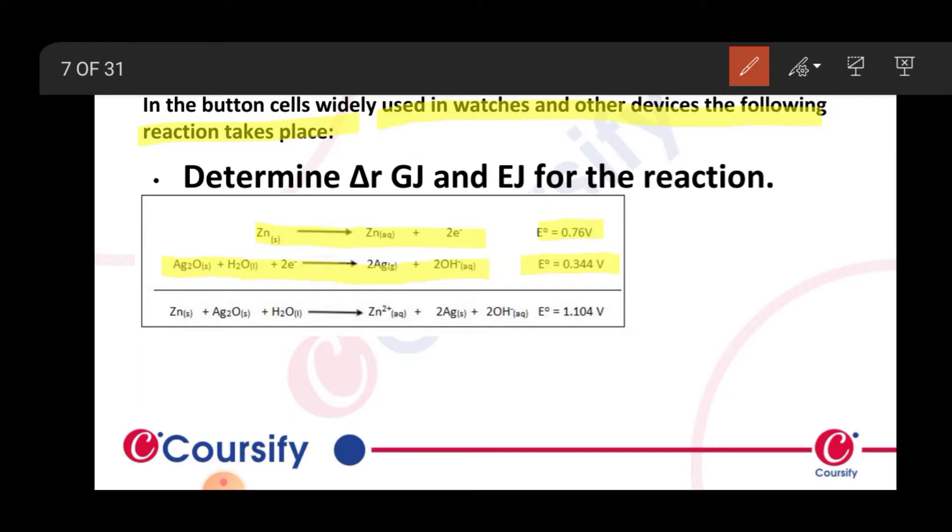Zinc is 0.76, this means that this oxidation potential is 0.76. Zinc is 0.76 minus 0.76. Determine Δr G and EJ for the reaction.